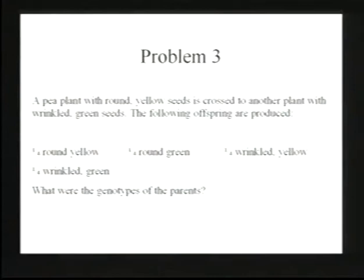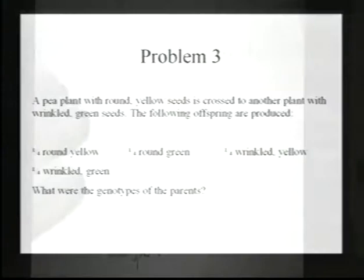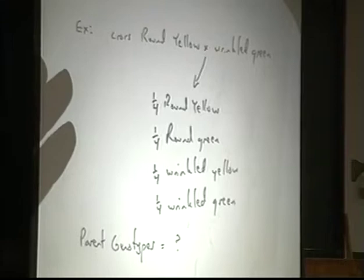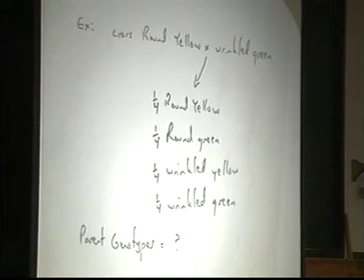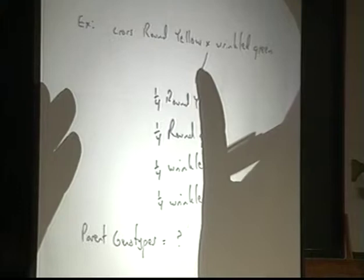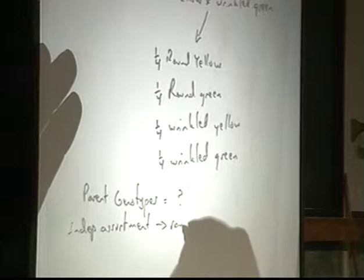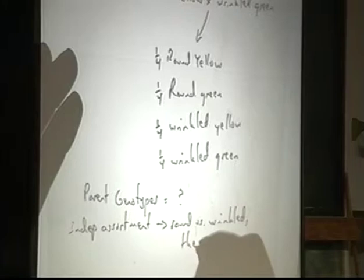With this problem, we cross a round yellow with a wrinkled green and got these ratios out — equal frequencies of all four possible progeny types. So what were the parent genotypes? With a little bit of deductive reasoning, you can actually solve this without having to go through all of the ratios, but I want to show you the ratios so that if you don't immediately see how to solve it, you can.